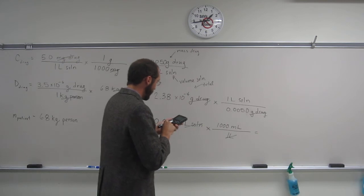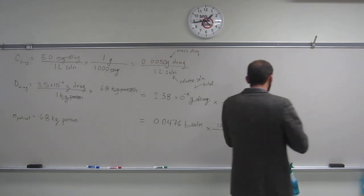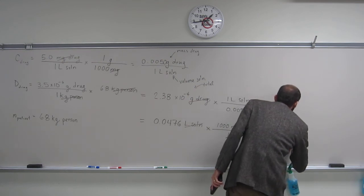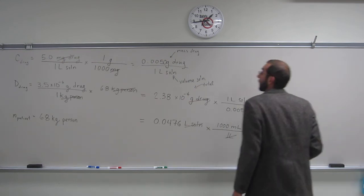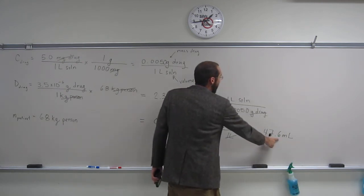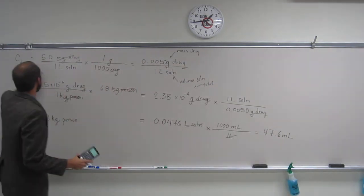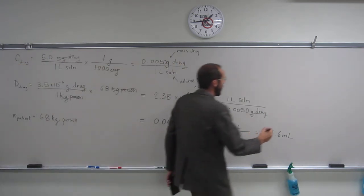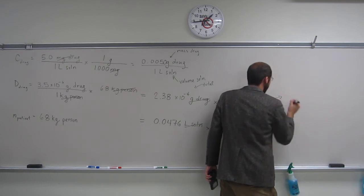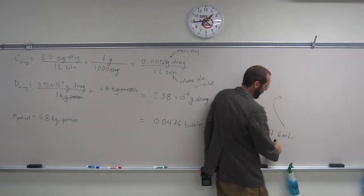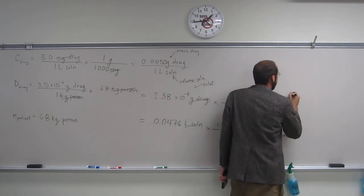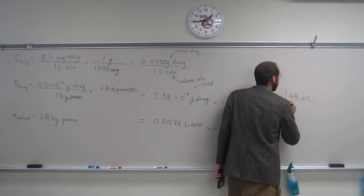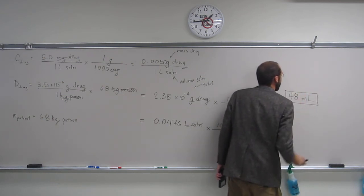And then, of course, it's going to be 47.6 milliliters. And actually, this is not to the right number of significant figures, of course, because this has 2 significant figures, this has 2 significant figures, this has 2 significant figures. So, with significant figures involved, we're going to round this 6 up. So, it's going to be 48 milliliters. So, that'll be to 2 significant figures.